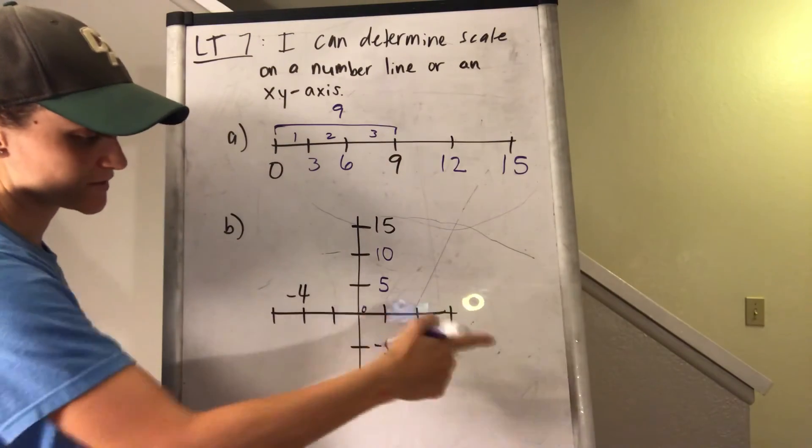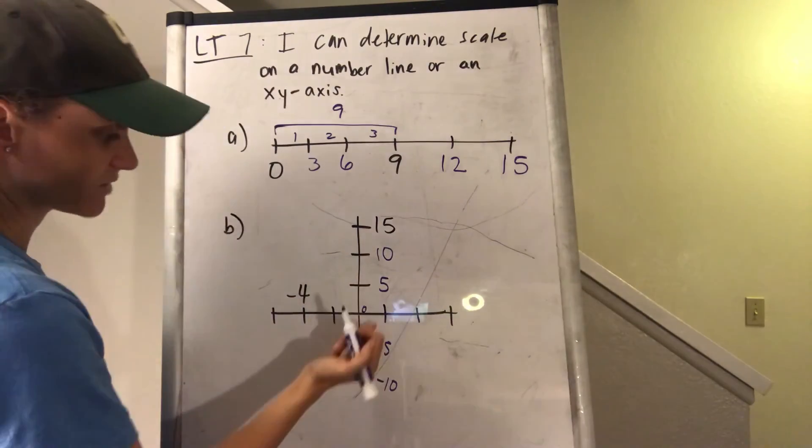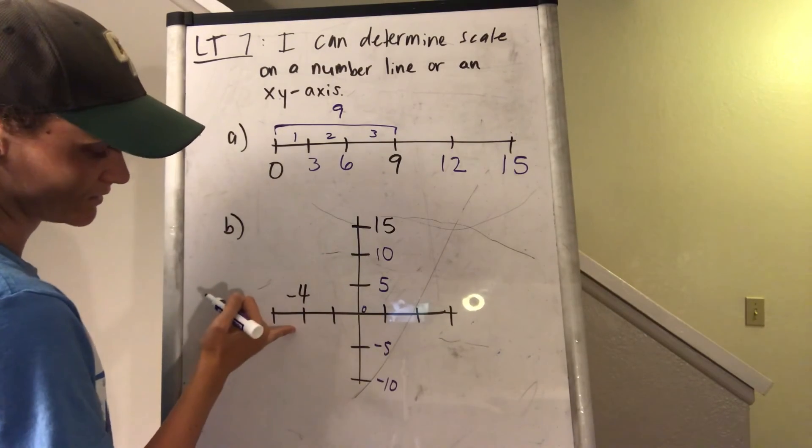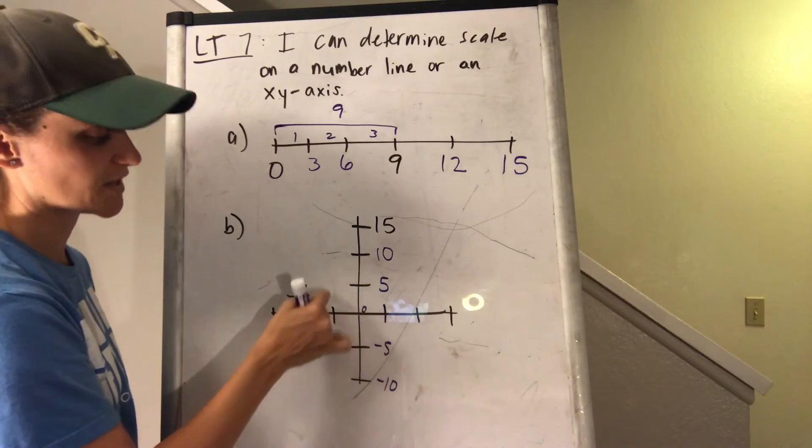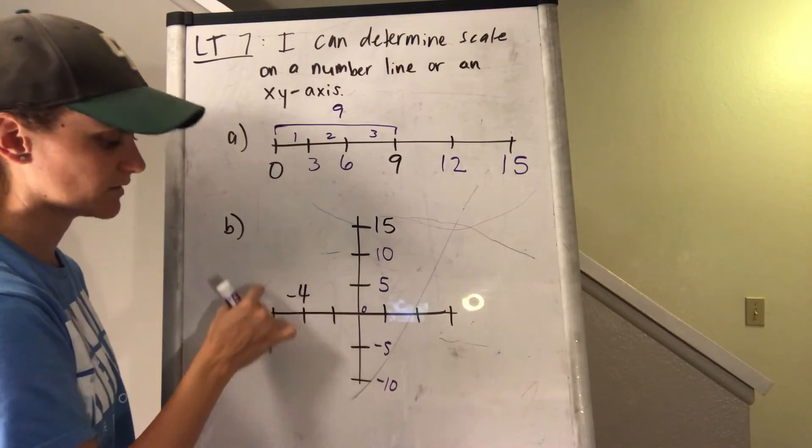Alright, for the x-axis here, or the other number line, same idea. So I'm at 0 and negative 4. So I realize it goes by 2s because negative 2, negative 4, negative 6.